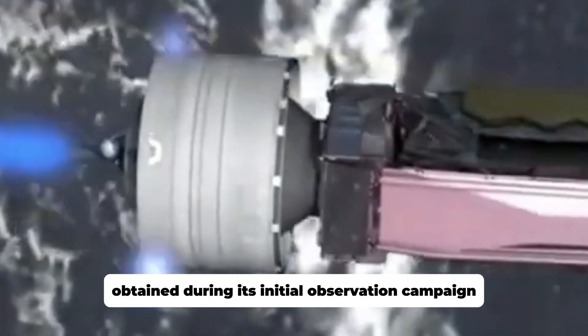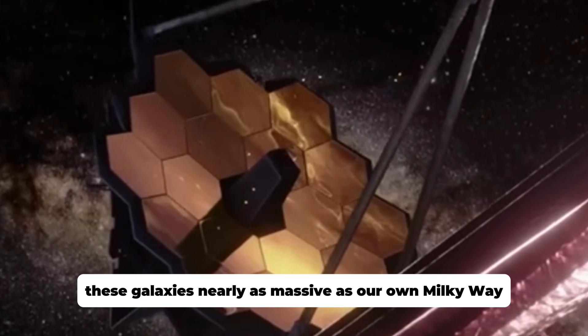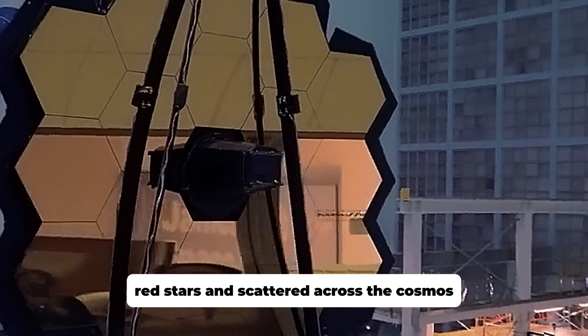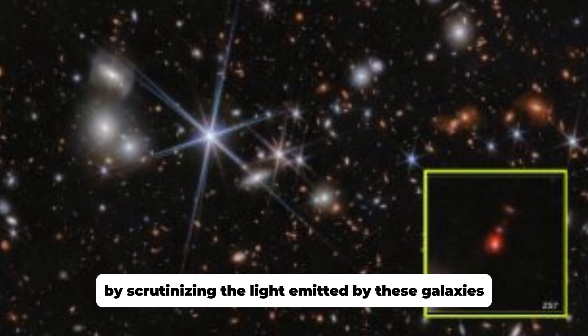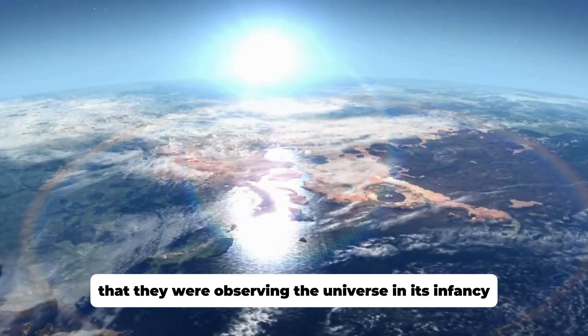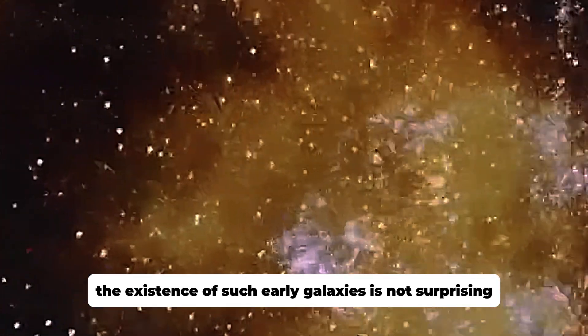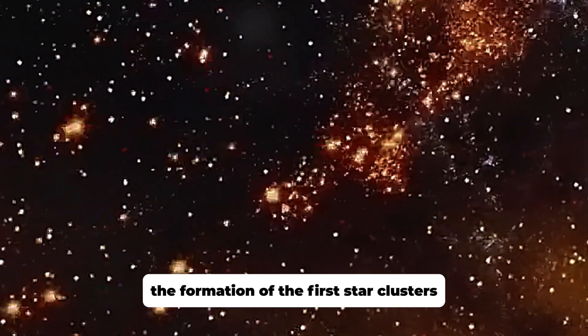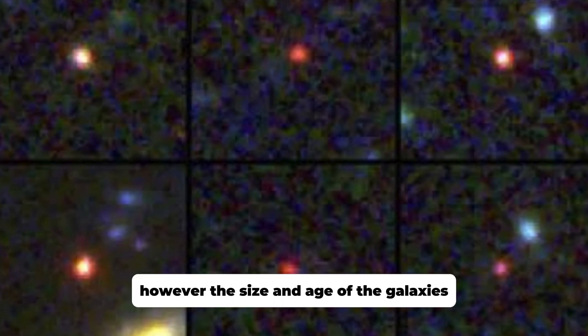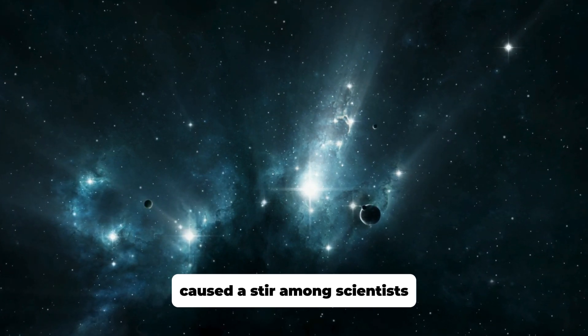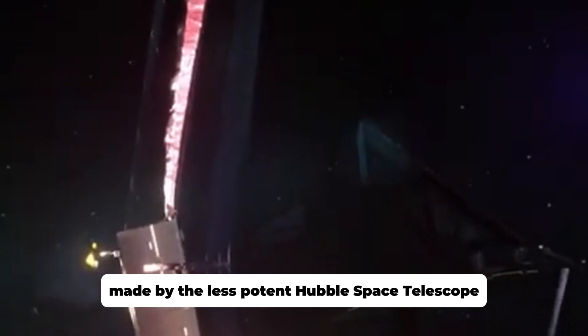While scientists were still working on unraveling the mysteries that might lie hidden within the phantom galaxy, the James Webb Space Telescope observed yet another extraordinary phenomenon. This time, deep field images obtained during its initial observation campaign revealed enormous distant galaxies that defied expectations. These galaxies, nearly as massive as our own Milky Way, were filled with mature red stars and scattered across the cosmos. However, their immense distance rendered them visible to the telescope only as tiny reddish dots. By scrutinizing the light emitted by these galaxies, astronomers concluded that they were observing the universe in its infancy, a mere 500 to 700 million years after the Big Bang. However, the size and age of galaxies discovered in the Webb images have caused a stir among scientists. These findings contradict existing notions about the appearance and evolution of the early universe.